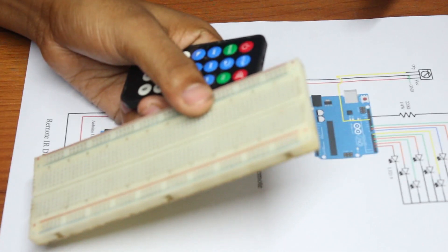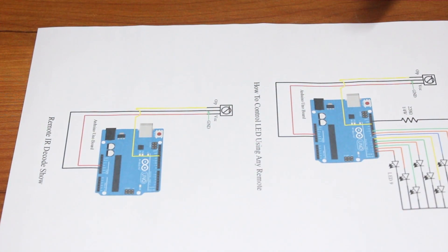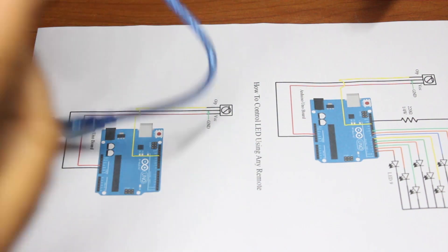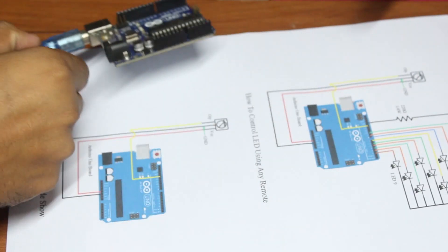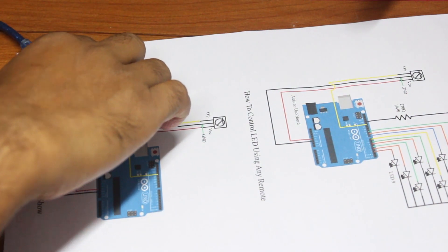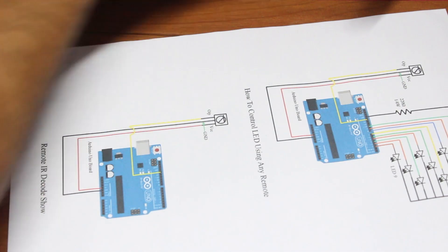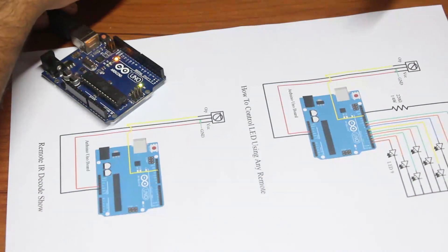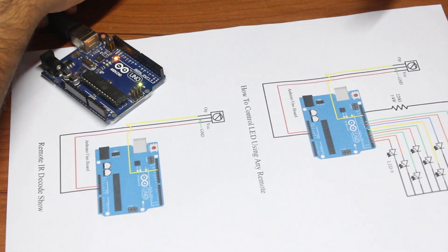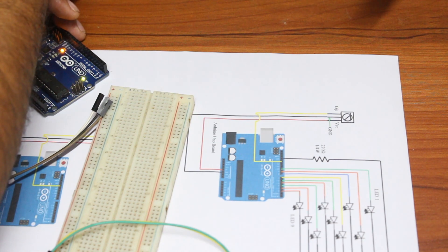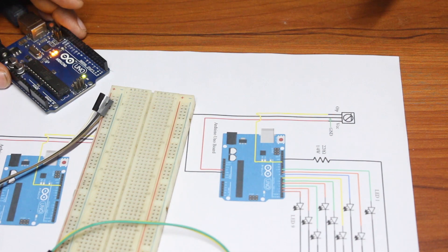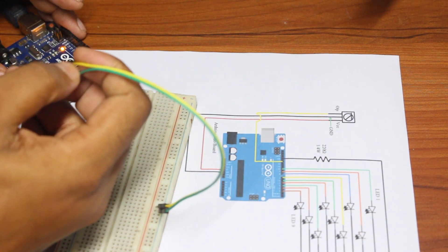Connect the breadboard and jumper wires first. Then on the Arduino board, load and upload the program. Select the Arduino board, upload the code — upload is complete.